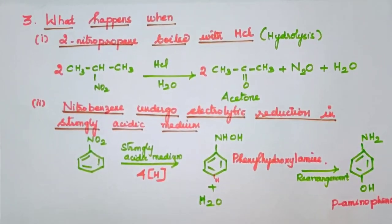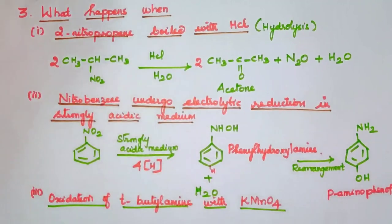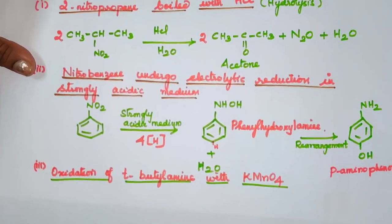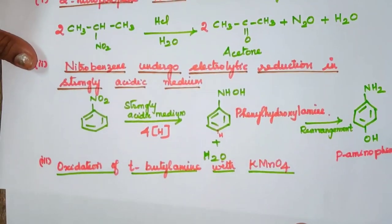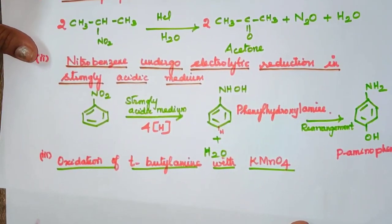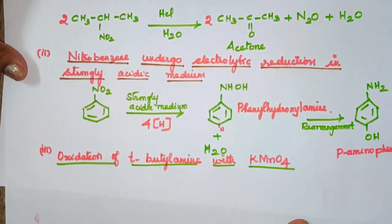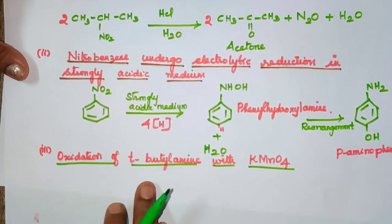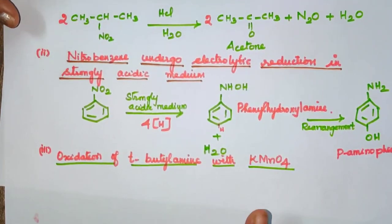Para-aminophenol is the final product. Next, the third question: oxidation of tertiary butylamine with KMnO4. Again, we identify the reactant and the reaction.